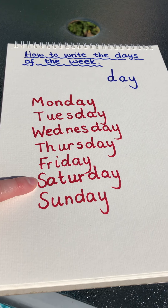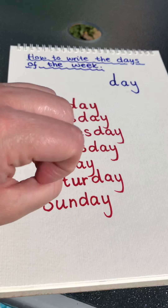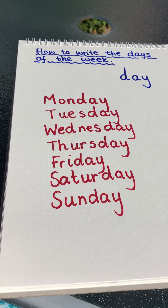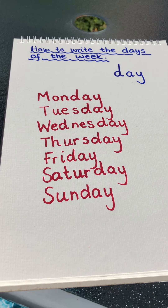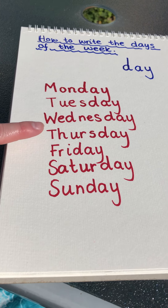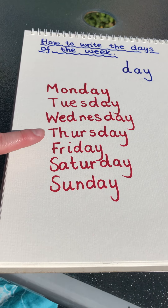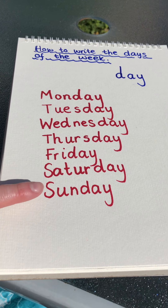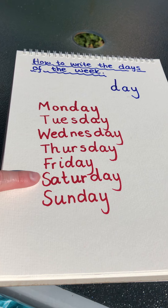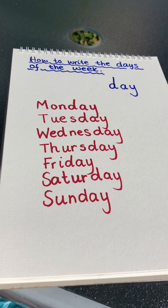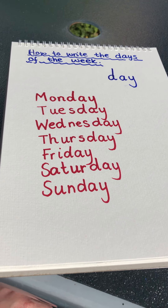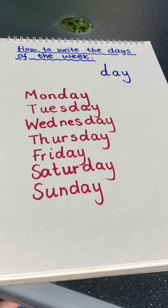Now let's read them properly as well, just to make sure: Monday, Tuesday, Wednesday, Thursday, Friday, Saturday, Sunday — one, two, three, four, five, six, seven days of the week! Have fun making up some silly ways of learning how to spell them. Bye for now!